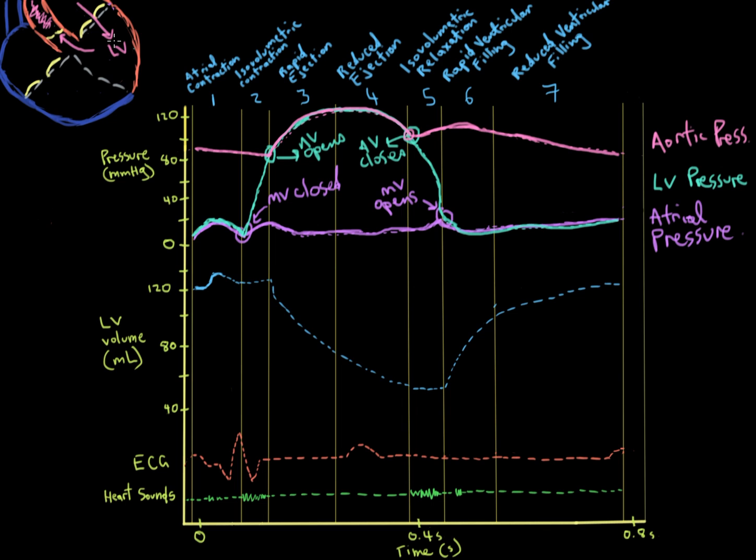So when the atrium fully contracts, it'll put a little bit more blood into the left ventricle. We actually get above the 120 milliliters mark. However, that's a little too much for the ventricle to handle, so a little bit goes back up into the atrium before the valves close. That brings us back down to about 120.